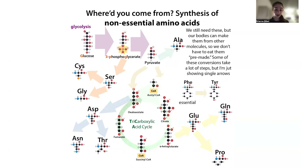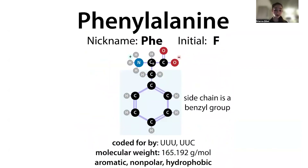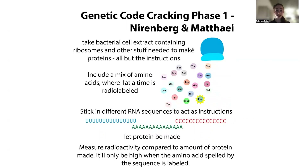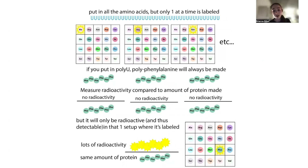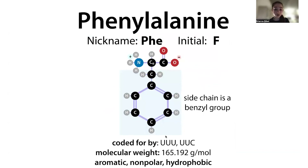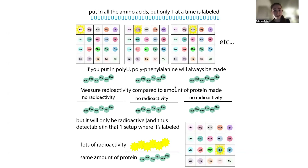Phenylalanine is also essential - our bodies can't make it ourselves, so we need to get it through our diet and then make tyrosine from it. Essential just means our body can't make it itself. Phenylalanine was also essential to the discovery of core principles of biology and biochemistry. Some of my favorite experiments were the Nirenberg-Matthaei experiments that cracked the genetic code, figuring out which nucleotides spell which protein letters. In the famous poly-U experiment, they put in a bunch of RNA that was all just U - and showed that UUU is the codon for phenylalanine. So no matter what your reading frame is, UUU is going to give you phenylalanine.